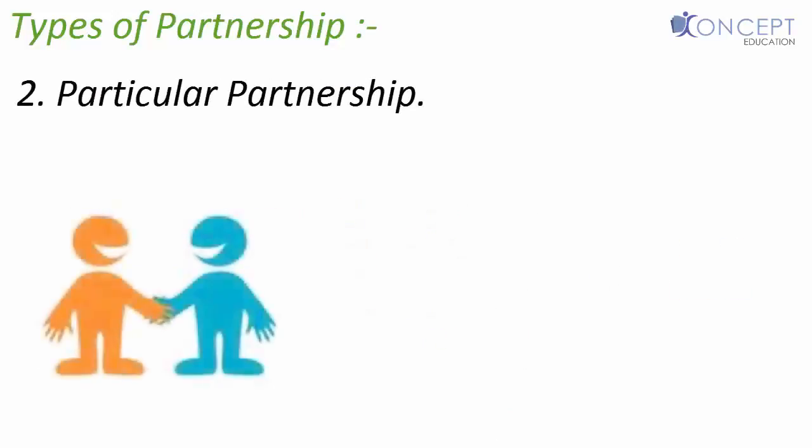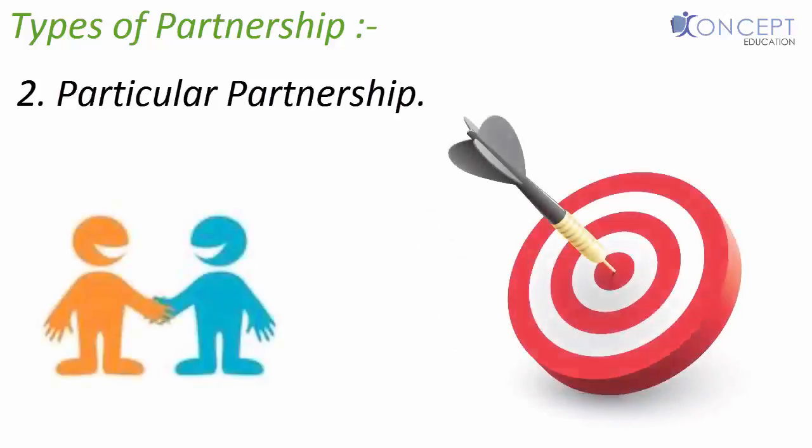A particular partnership, on the other hand, is a partnership created for a specific undertaking like constructing a road or a railway line project. As soon as the objective is completed, the partnership comes to an end.